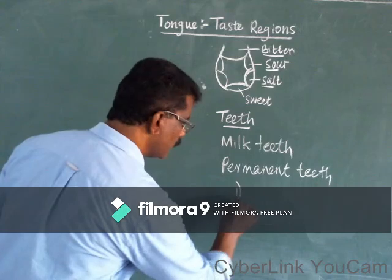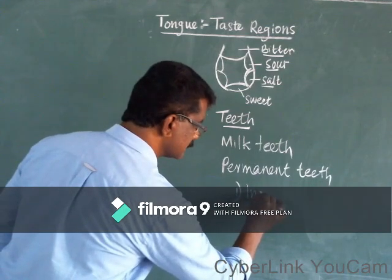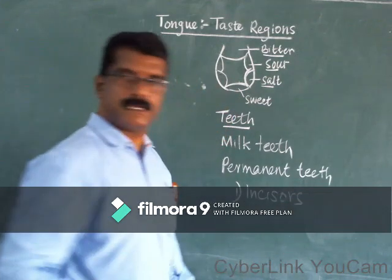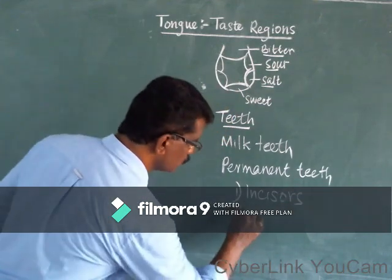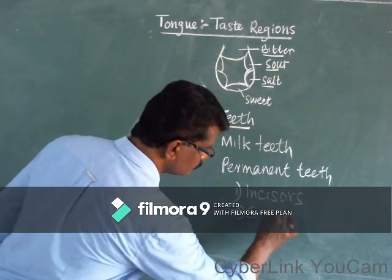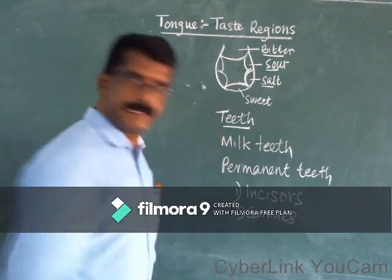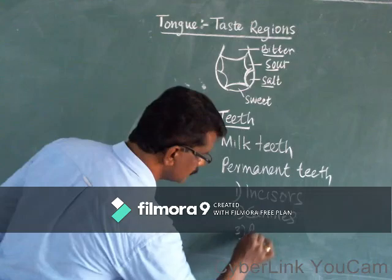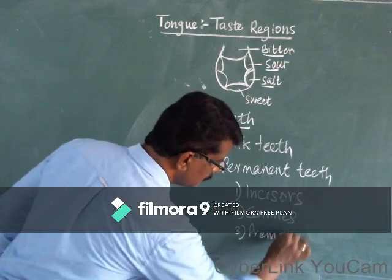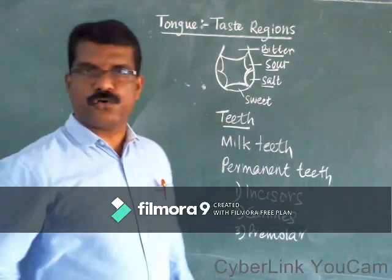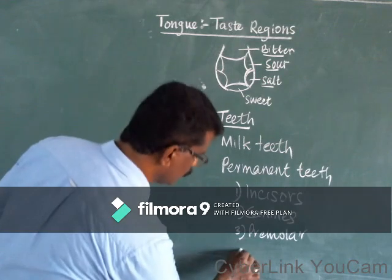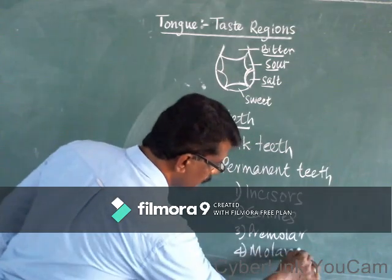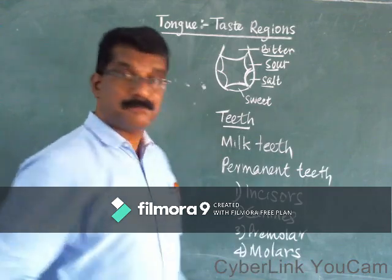Permanent teeth are of four types: one, incisors; two, canines; three, premolars; and four, molars. These are the four types of permanent teeth.